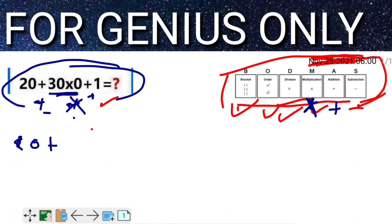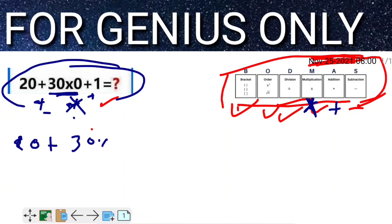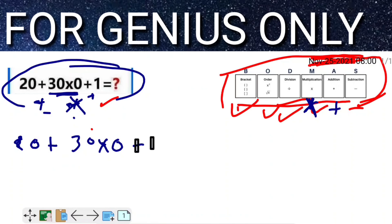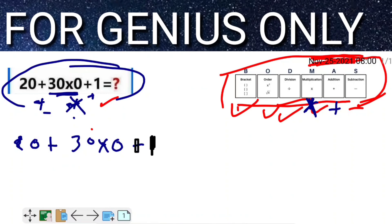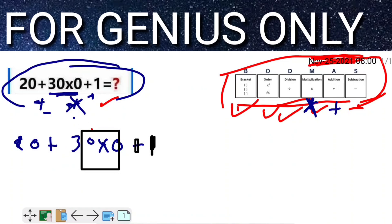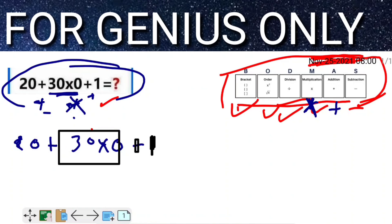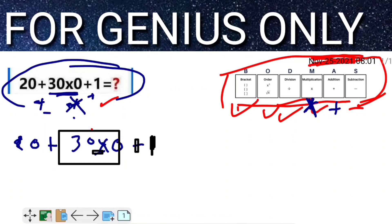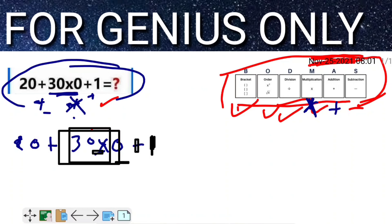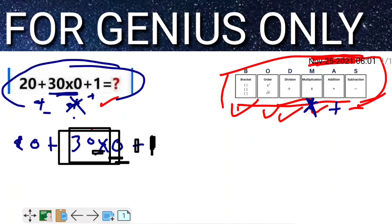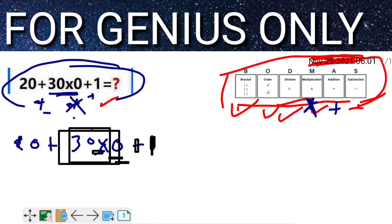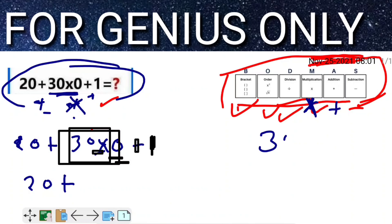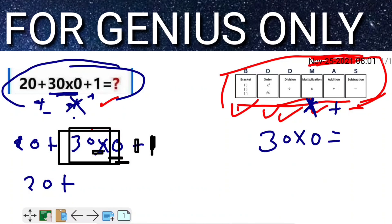Now watch here: 30 × 0. 30 multiplied by 0 equals 0. If anything is multiplied by 0, it becomes 0.